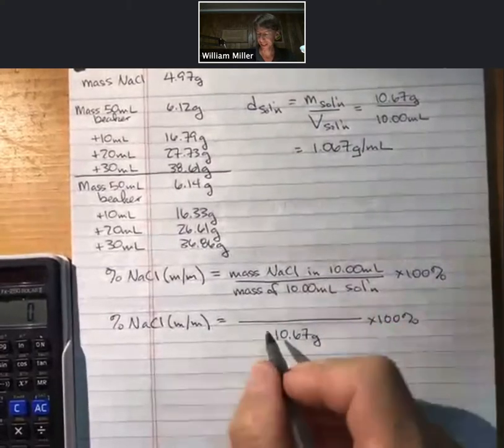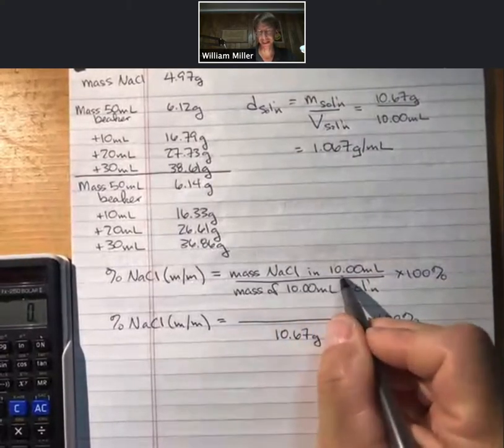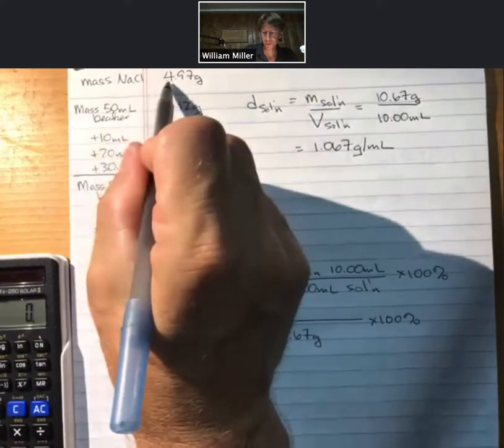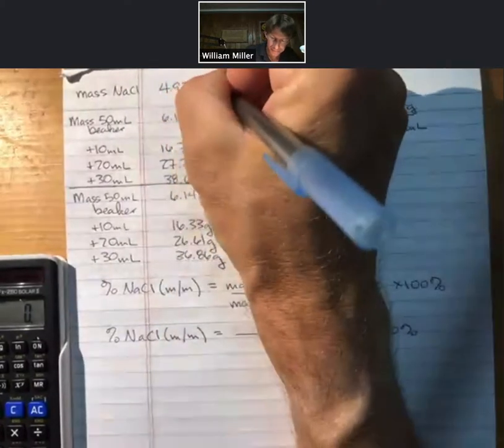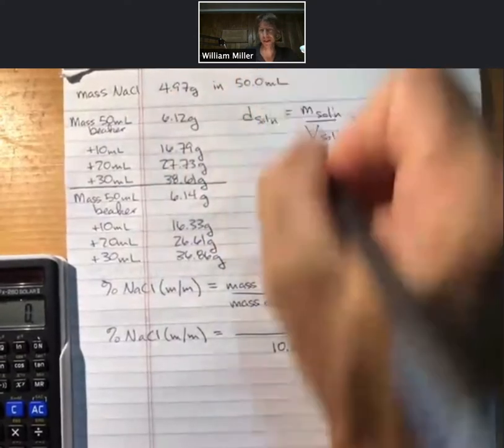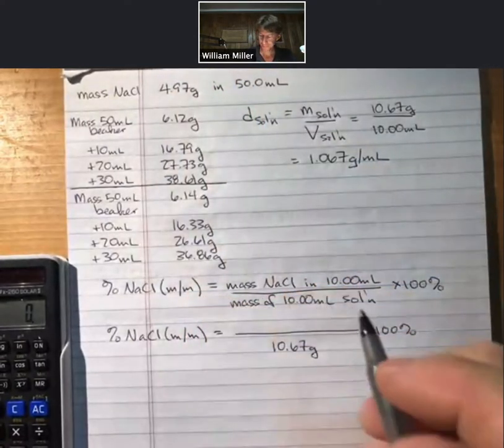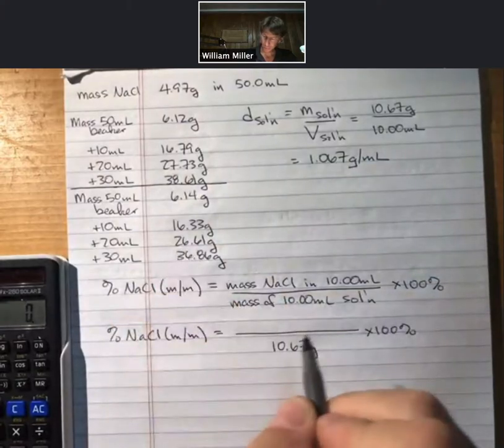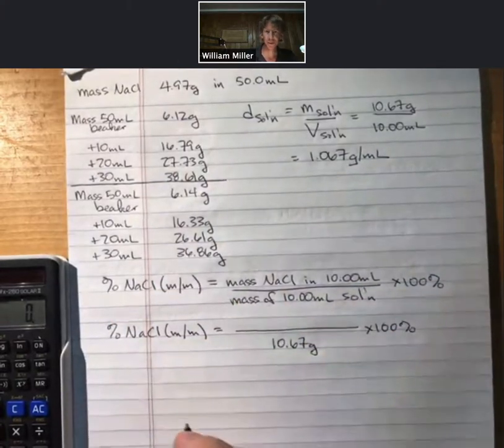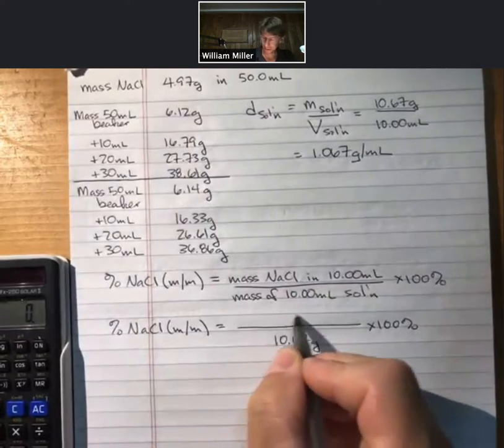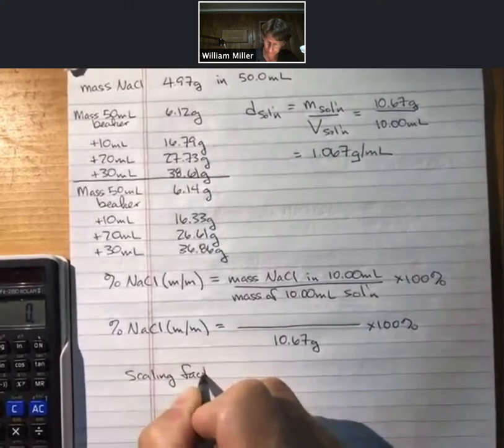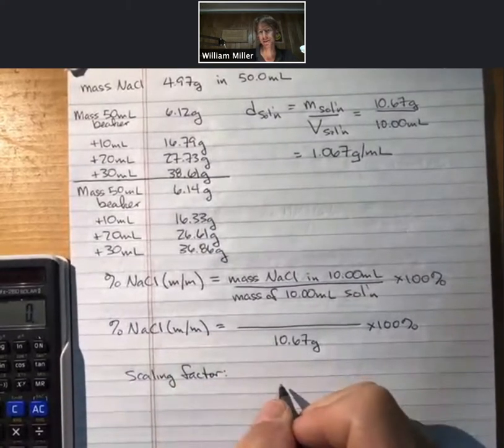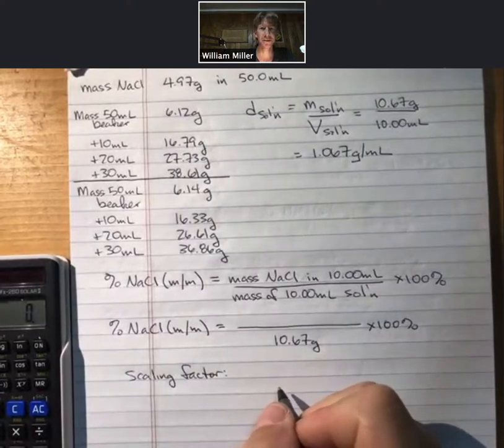What's a little trickier is the mass of sodium chloride in 10 milliliters. Now, there's 4.97 grams of sodium chloride in 50 milliliters. That was actually 50.0 milliliters since we were using a graduated cylinder. And we had a 10 milliliter sample. So in order to get the top part of this, we have to use what's called a scaling factor. And there's actually going to be two scaling factors here.